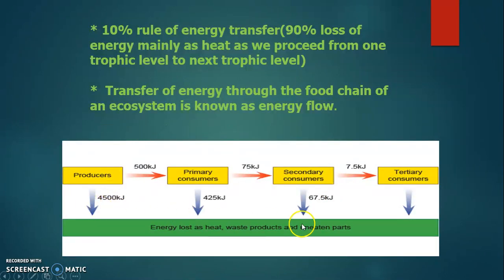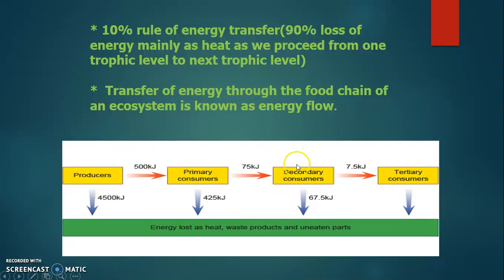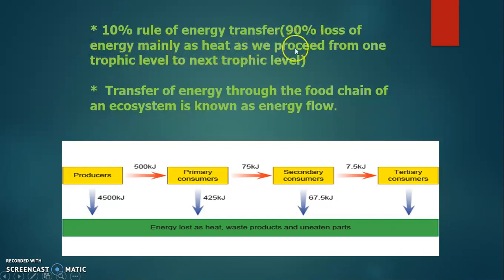In this flow chart you can easily see how much energy is transferred. Only 10% energy is transferred from one trophic level to another. In this flow diagram, only 10% energy goes from producers to primary consumer, then secondary consumer, then tertiary consumer. Energy is lost as heat — where does the 90% energy go? This 90% energy is lost mainly as heat as we proceed from one trophic level to the next, along with waste materials and uneaten parts.